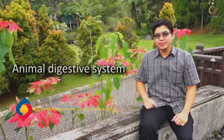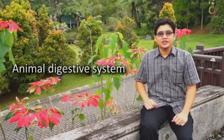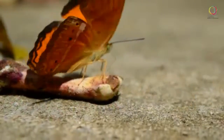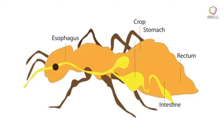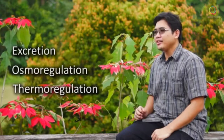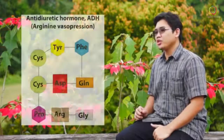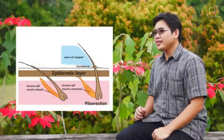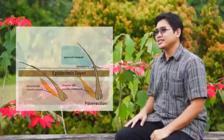This includes the animal digestive system, where we will discuss how animals obtain their food, the processes that take place to digest the food and absorb the nutrients. Also covered are excretion, osmoregulation, and thermoregulation, where we will relate the process of removing metabolic waste, control of osmotic balance, and regulating internal body temperature to maintain homeostasis.